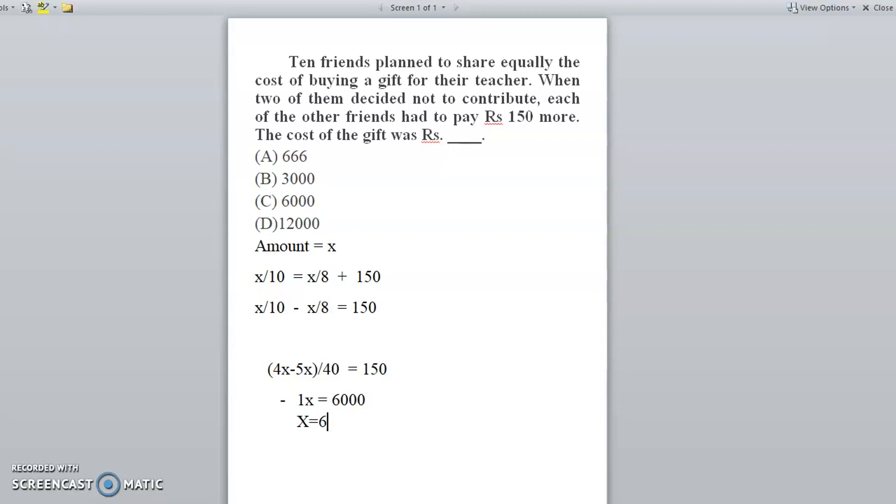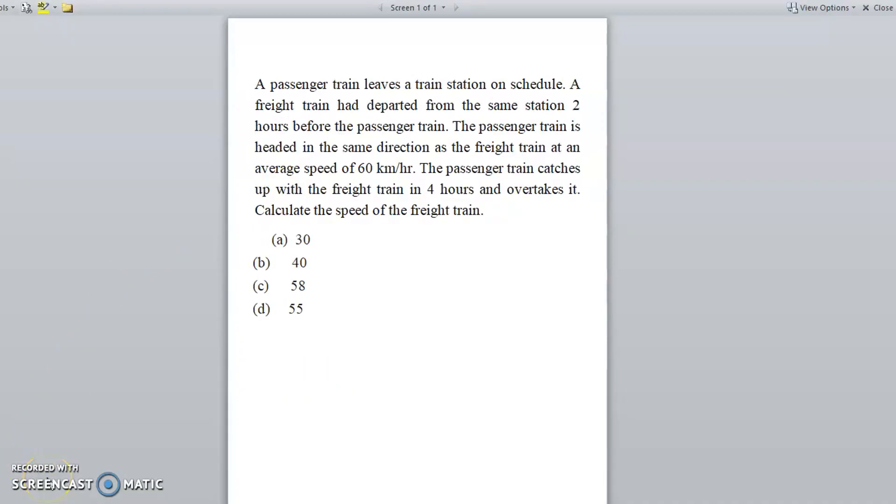Next question is: a passenger train leaves a train station on schedule. A freight train had departed from the same station two hours before the passenger train. The passenger train is headed in the same direction as the freight train with average speed of 60 km per hour. The passenger train catches up with the freight train in 4 hours and overtakes it. Calculate the speed of the freight train.